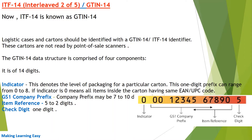are not having the same UPC code. The second part is the GS1 company prefix, which is of size 7 to 10 digits. The third is the item reference, having a size of 5 to 2 digits, and the last is the check digit, which is a single digit.